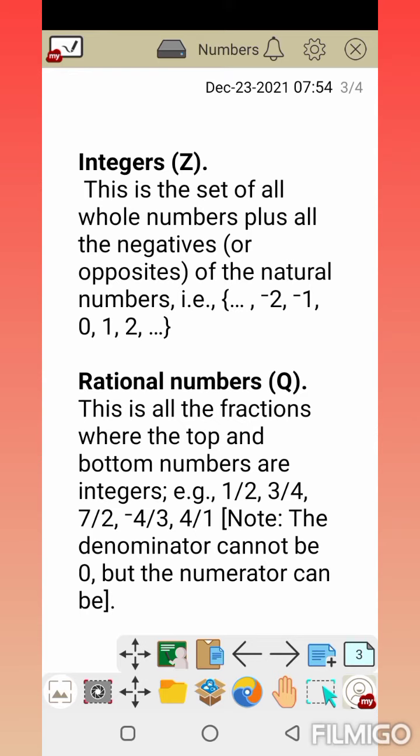Integers are whole numbers (0, 1, 2, 3, 4, 5, 6) plus negative numbers: minus 1, minus 2, minus 3, minus 4.